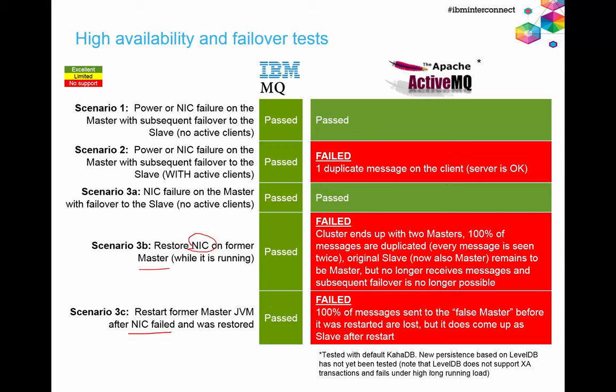If you restart the former master JVM after a network failure and then restore it, you lose all messages on that master — it does not come back as a slave after restart. So you either duplicate all messages or lose all of them: you could withdraw money from one account but it may never reach another, or it could arrive twice. LevelDB does not support XA transactions, so it's not appropriate for transactional payloads. If you handle all transactions and failover in your application you might be able to use LevelDB, but we haven't tested that yet.